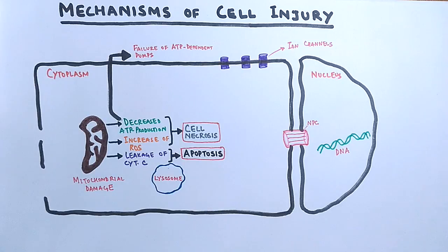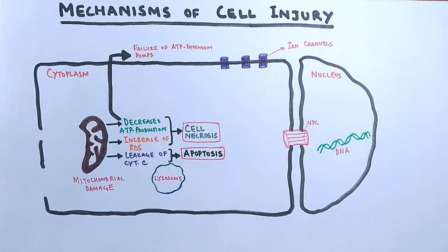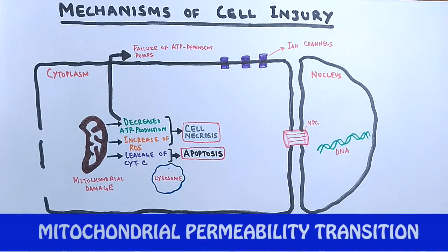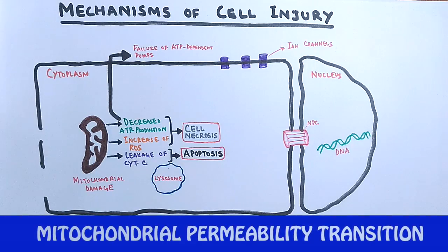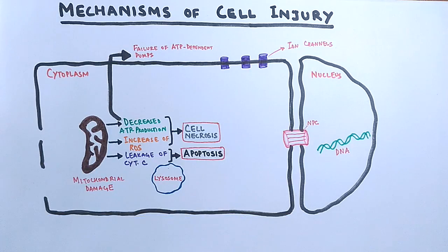Decreased ATP production directly affects ATP-dependent pumps. Non-functional ATP-dependent pumps fail to regulate the normal influx and efflux of electrolytes and water. Increased intracellular calcium ions activate cytosolic enzymes like proteases, phospholipases, endonucleases, and ATPases, which enhance mitochondrial permeability — a process called mitochondrial permeability transition, mediated by pore complex formation in the membrane.